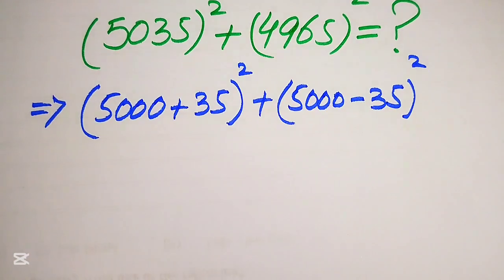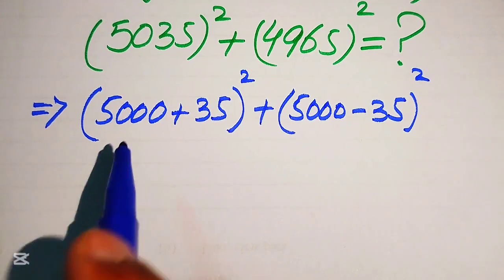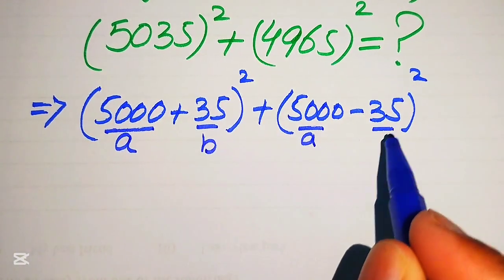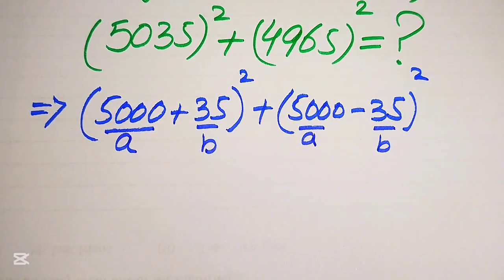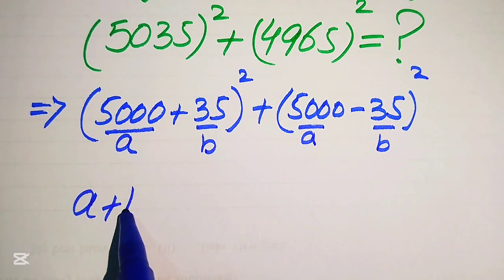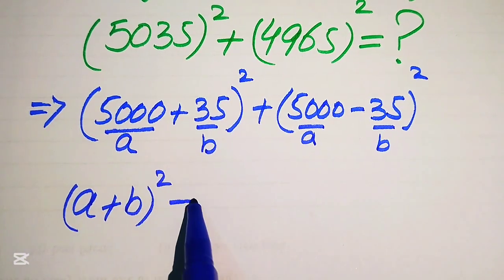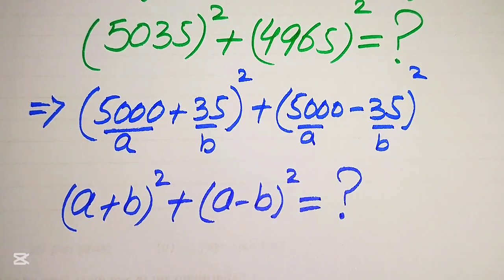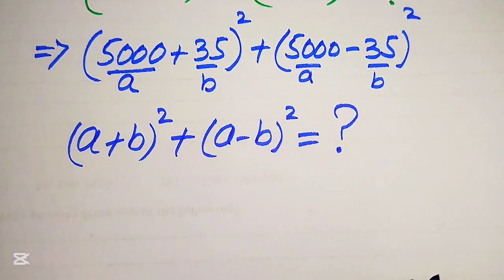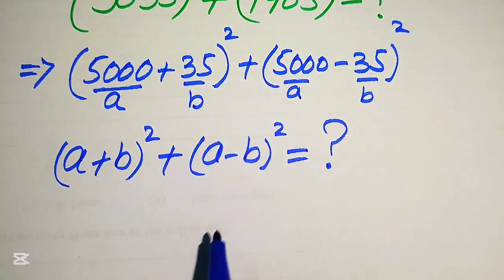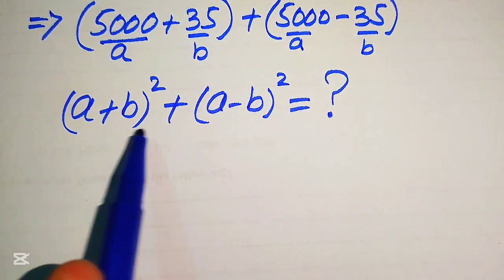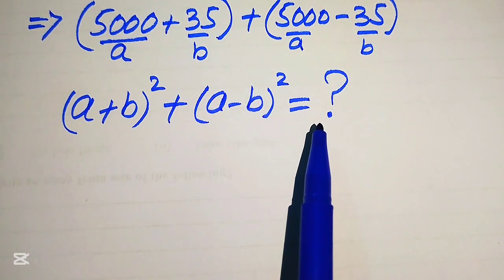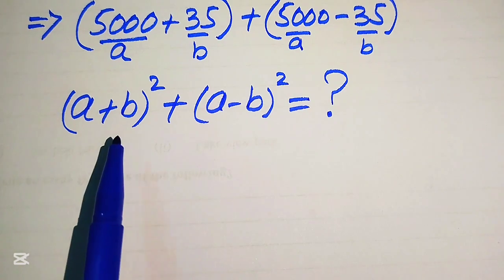Now, if we let A equal 5000 and B equal 35, we have A plus B whole squared plus A minus B whole squared. We will apply the algebraic formula for this expression. If you remember the formula directly, you can apply it; if not, we will derive it easily.